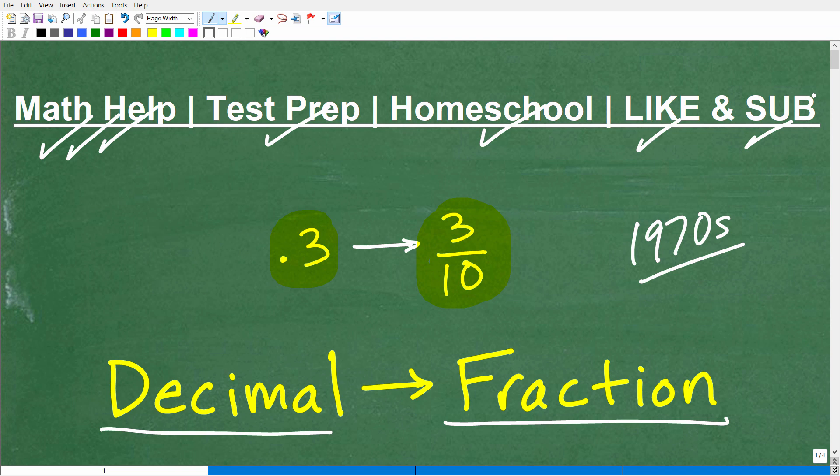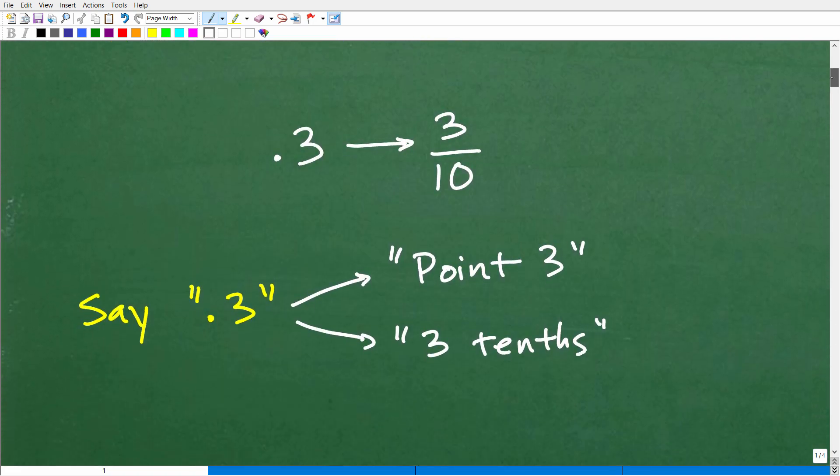Okay, so let's get into how to change a decimal to a fraction, an absolute must-know math skill. All right, so here is how this works. So here we have 0.3. Okay, so if I said, say this, like how would you describe this? Well, if I say 0.3, some of you would say, this is 0.3. That's the way I would say this out loud. But some of you might say, this is 3 tenths.